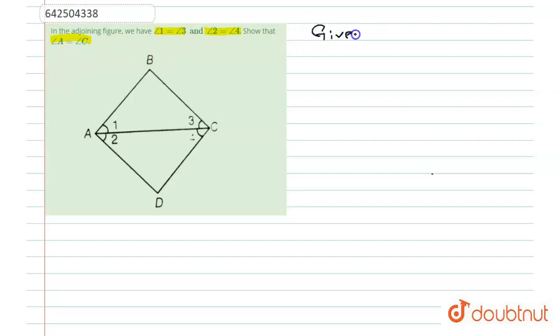We are given that angle 1 is equal to angle 3. This is angle 1 which is equal to angle 3. Similarly, angle 2 is equal to angle 4. This is equation 1 and this is equation 2.